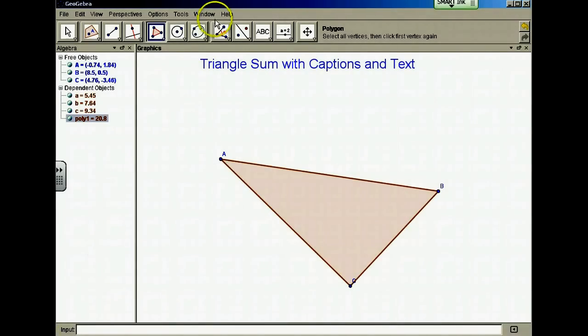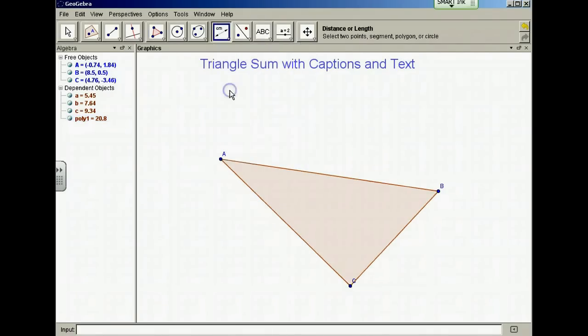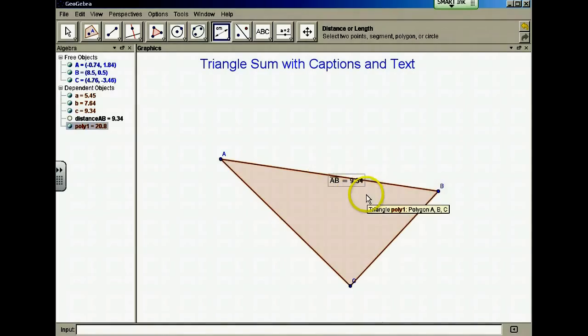Let's measure one side of this triangle. Within this pull-down menu are finding the distance so I'll click on that. I can select two points so I'll select A, B and it gives me a distance.